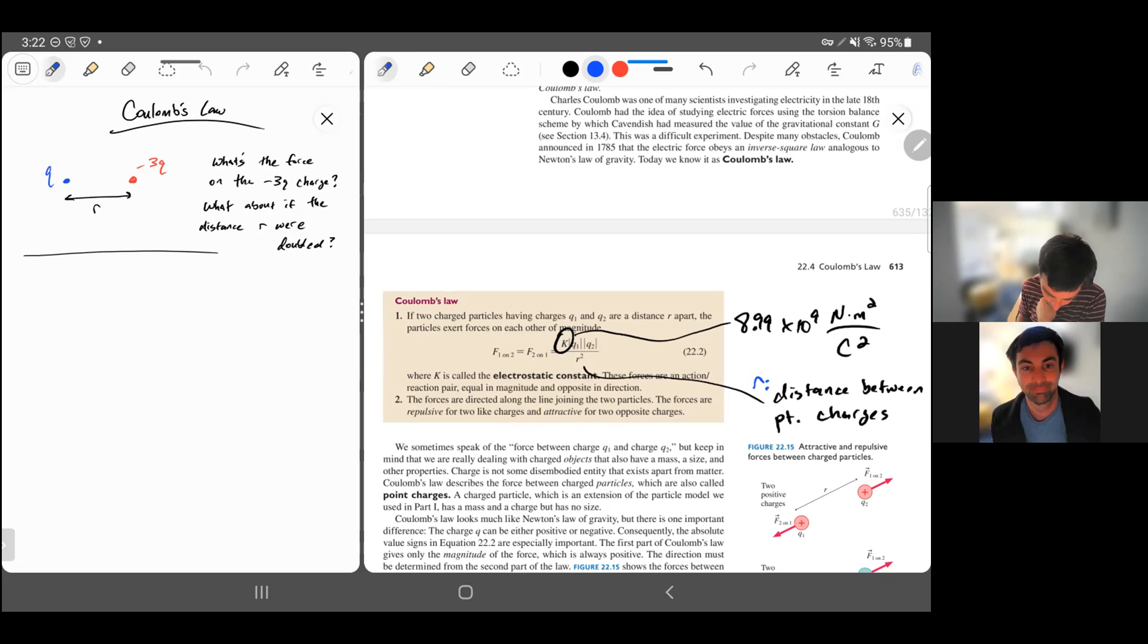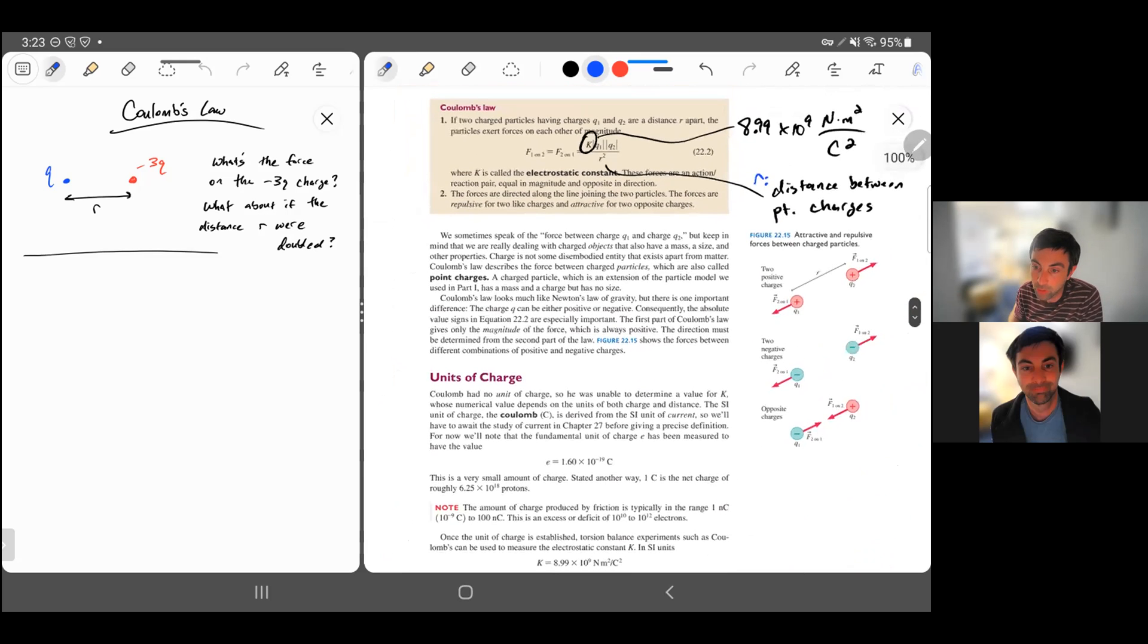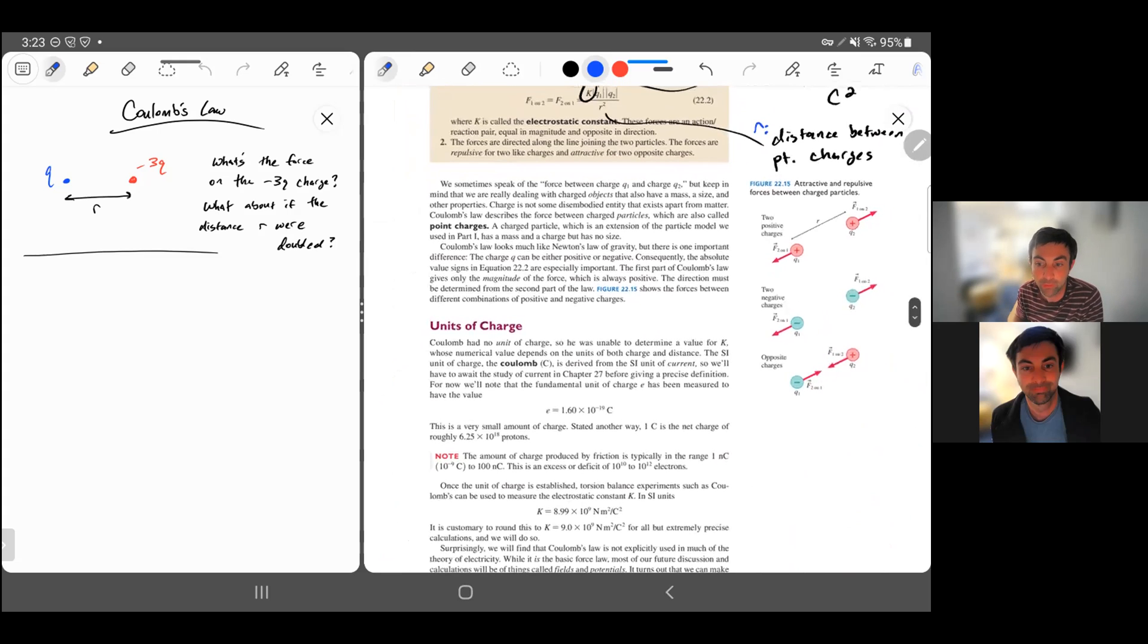To make this an equal sign, we have a constant of proportionality. This is just a constant called Coulomb's constant. So K is 8.99 times 10 to the 9 in SI units. We know that force has to be in Newtons, and the meter squared divided by Coulomb squared just cancels out the SI units as they appear here. As long as you plug in each charge in Coulombs and measure distance in meters, those units will cancel out and you're left with Newtons.